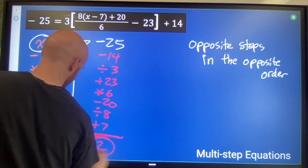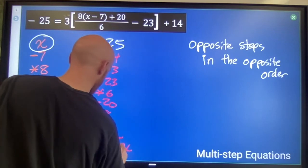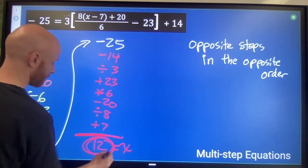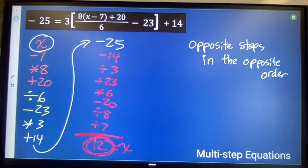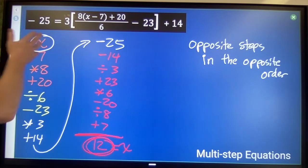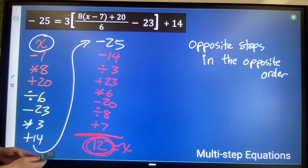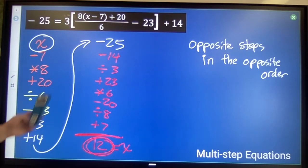And I get 12. X equals 12. Now, if I'm not sure of myself, if I think I might have made a mistake somewhere along the line, the beautiful thing about equations is you can always check your answer. You don't have to turn in a wrong answer ever.